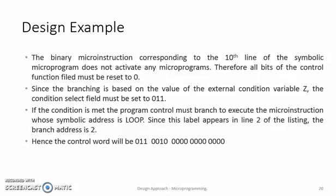Since the branching is based on the value of external condition variable Z, the condition select field must be set to 011. If the condition is met, the program control must branch to execute the microinstruction whose symbolic address is LOOP. Since this label appears in line number 2 of the symbolic listing, the branch address is 2, that is 0010. The value of the branch address field must be 0010.